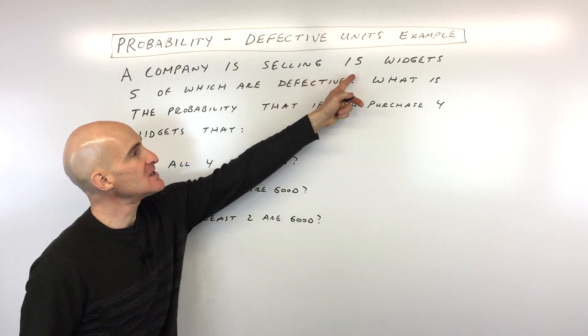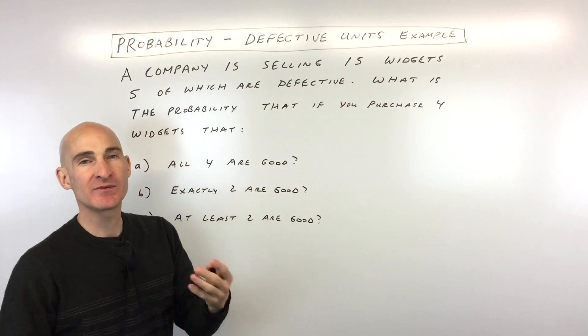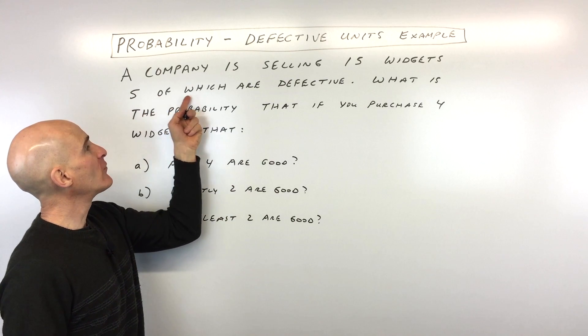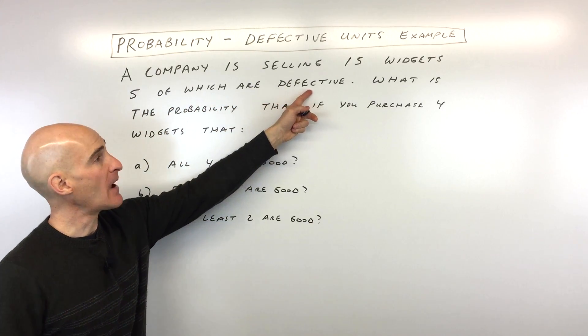So it says a company is selling 15 widgets. So widgets, just some type of object, right? Five of which are defective, meaning they're bad, they're not good.